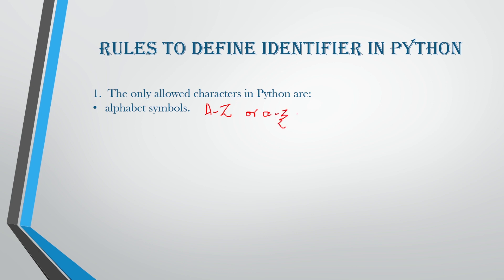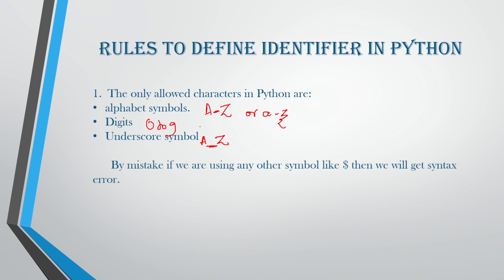These are the alphabetic symbols you can use for identifiers. Next are digits — the digits from 0 to 9 can be used. Then you have the underscore symbol. For example, if you are having a name like A_Z, the underscore goes in the middle. Please remember the difference between underscore and hyphen.